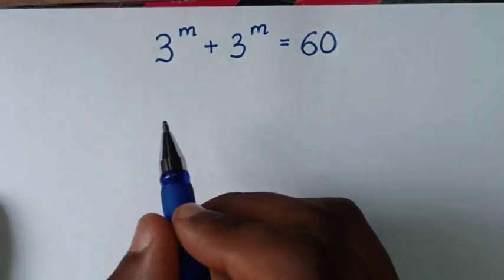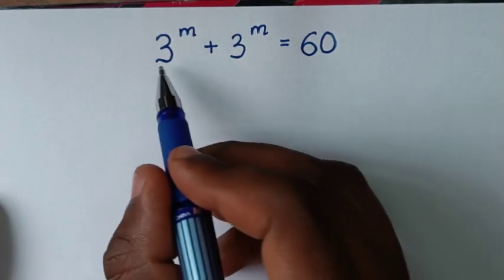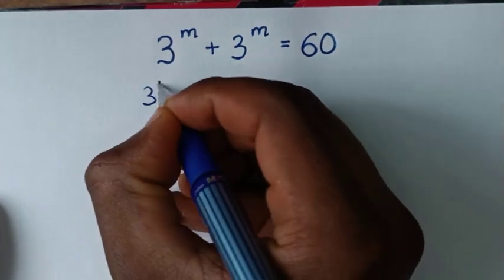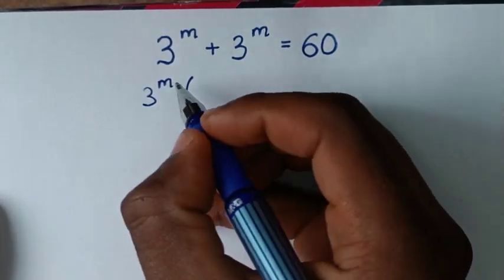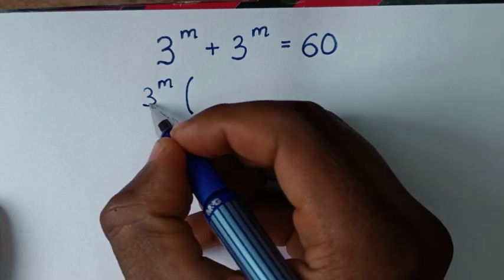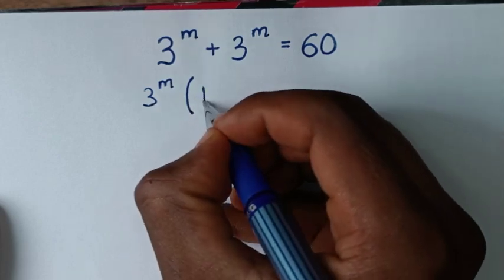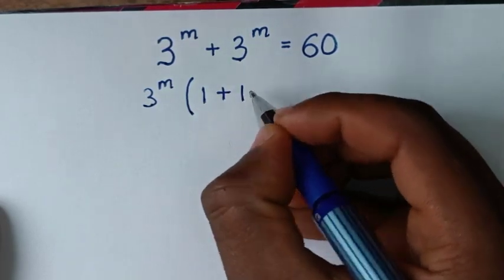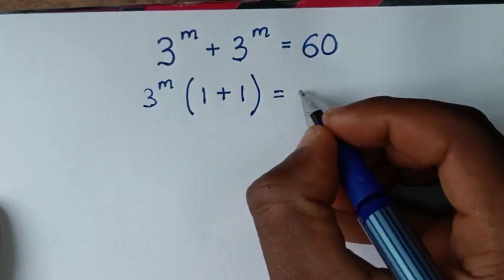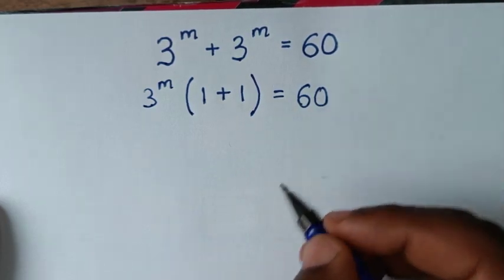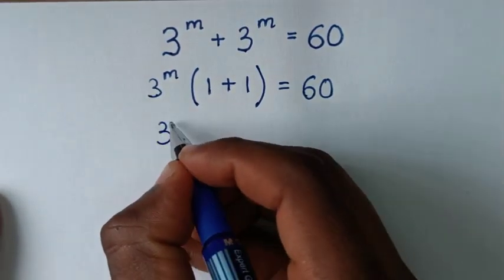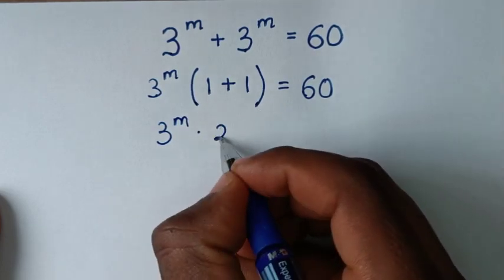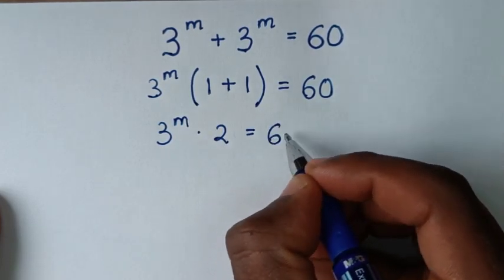In the first step, from the left side, 3 power m is common, so we will take 3 power m out of the bracket. Then 3 power m divided by 3 power m is 1, plus 3 power m divided by 3 power m is 1, inside the bracket, equal to 60. So it becomes 3 power m times 1 plus 1, which is 2, is equal to 60.